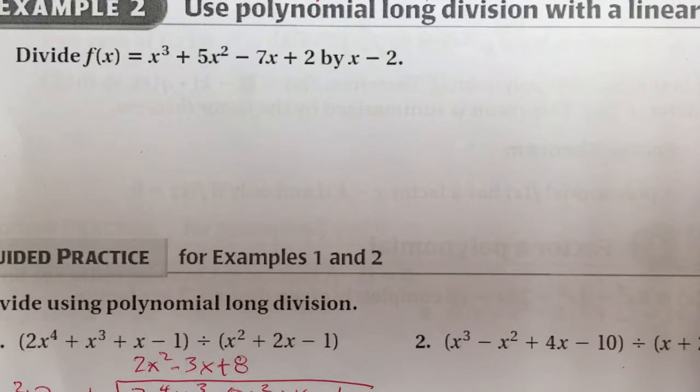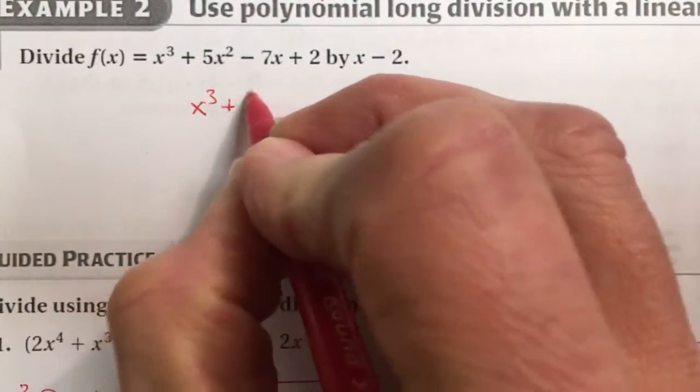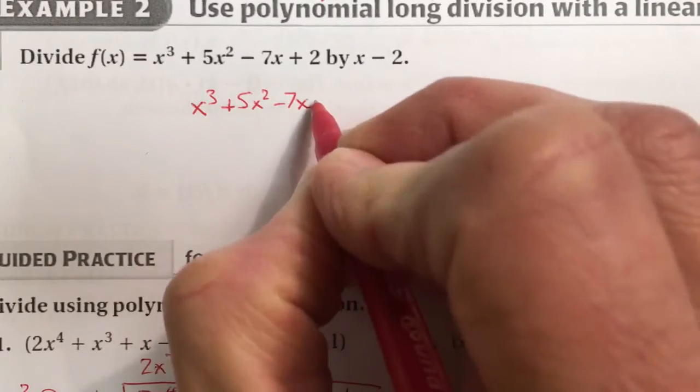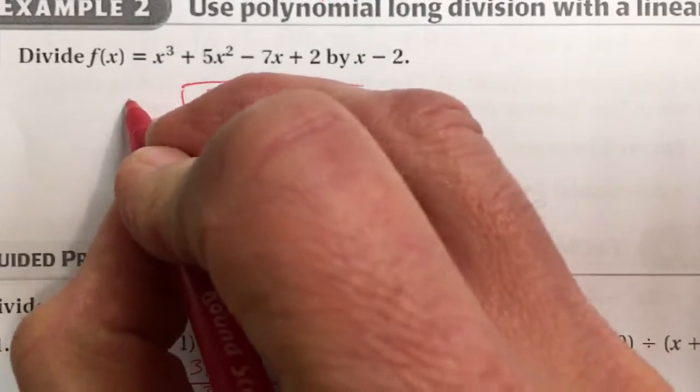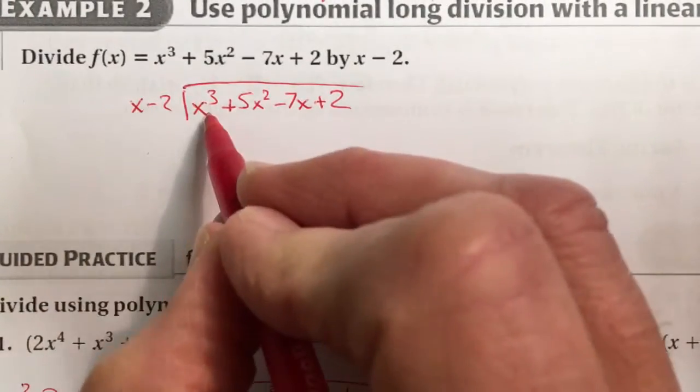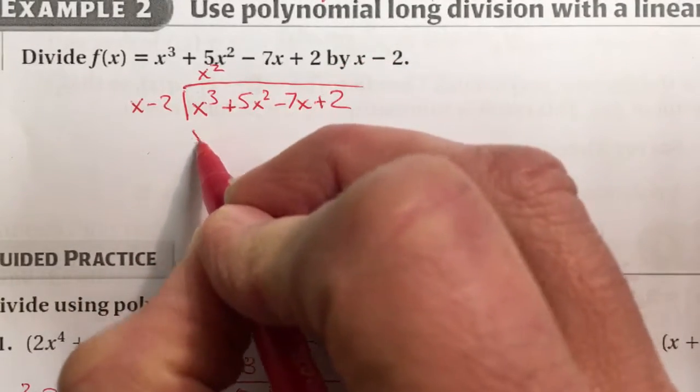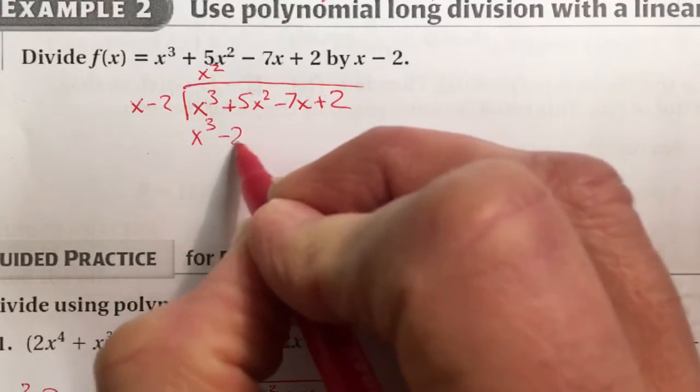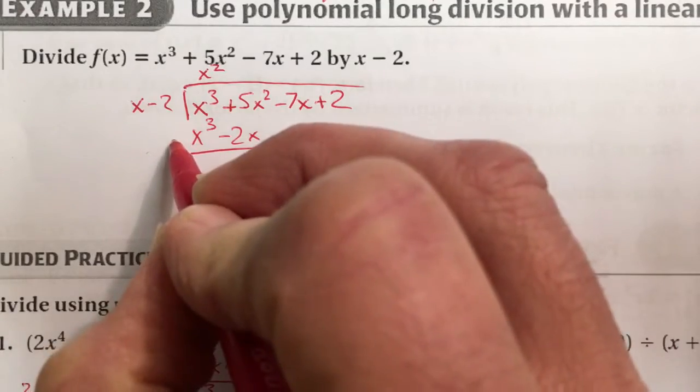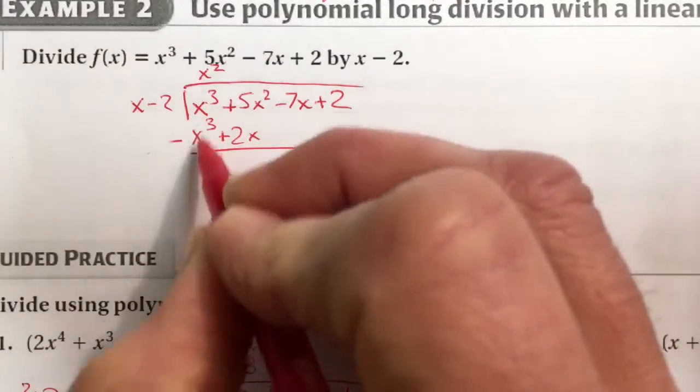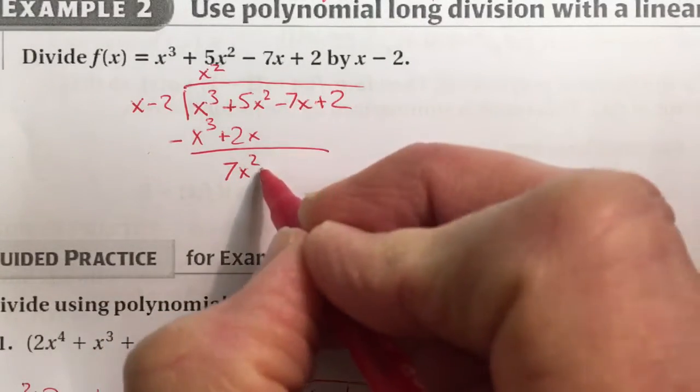Let's try some polynomial long division with a linear divisor. So let's set it up. x^3 plus 5x^2 minus 7x plus 2. Here's our linear divisor of x minus 2. The x goes into x^3, x^2 times. So x^2 times x is x^3, and minus 2x^2. Remember, you subtract and change all the signs. So subtract, add. x^3 cancels. Then we have 7x^2, and bring down the negative 7x.